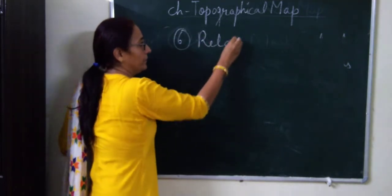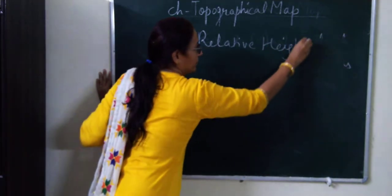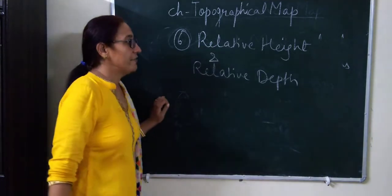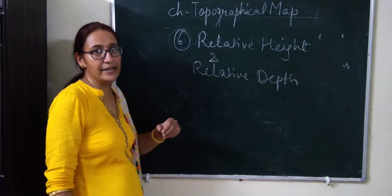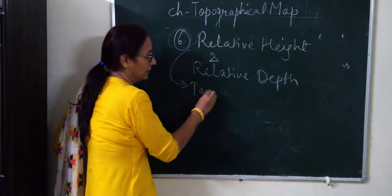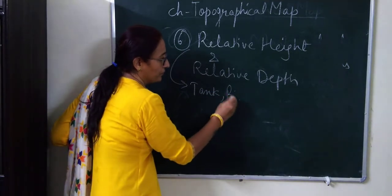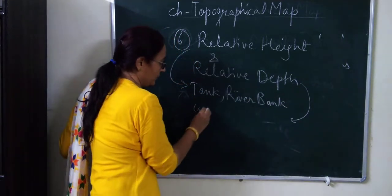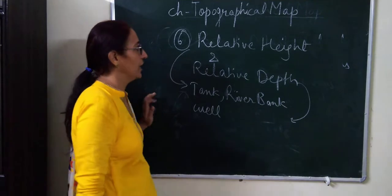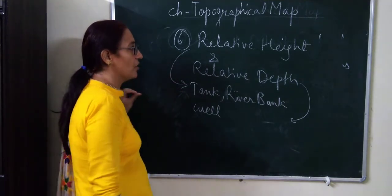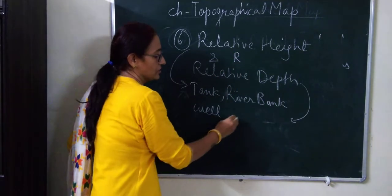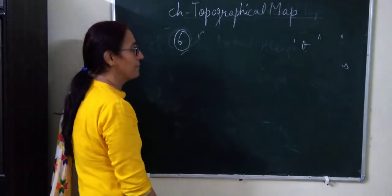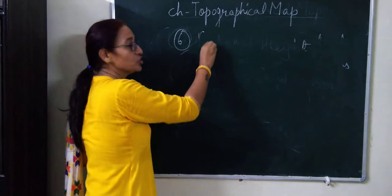The last topic is relative height and relative depth. Relative height is used to represent the height of a tank, river bank, and similar features. Relative depth is used for a well, tube well, and similar features. The symbol used is the letter R — written as capital R or small r.